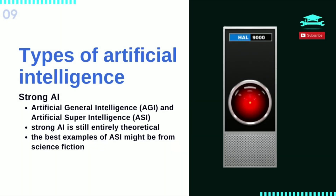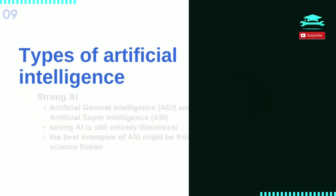In the meantime, the best examples of artificial super-intelligence might be from science fiction, such as HAL, the superhuman rogue computer assistant in 2001: A Space Odyssey.